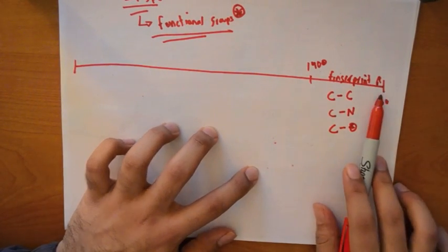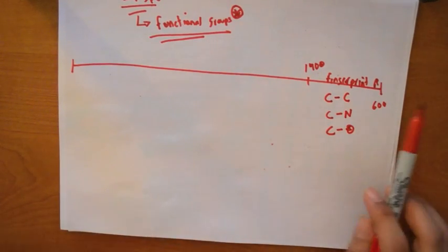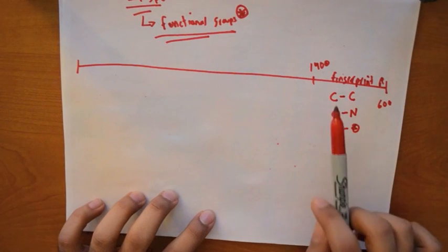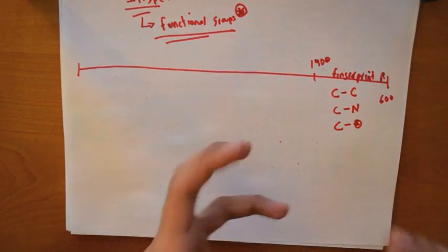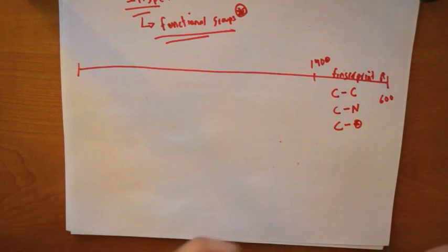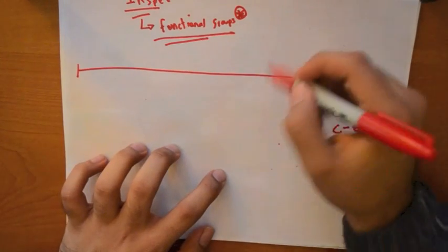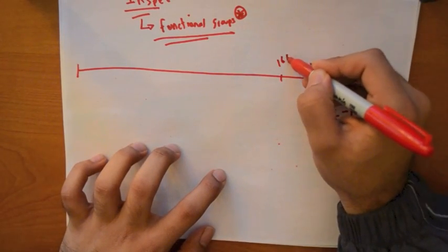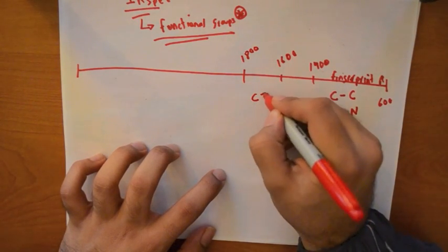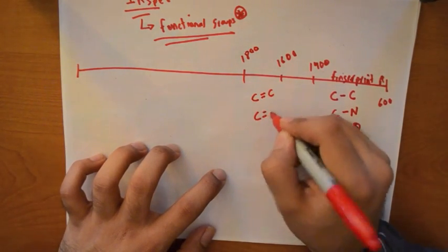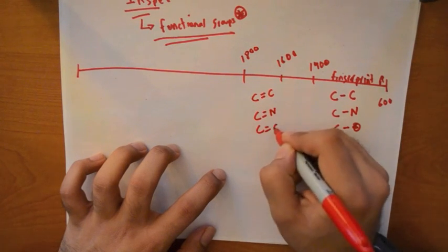Usually for a first year chemistry course or organic chemistry course, the fingerprint region is not enough information or it doesn't tell you much about it because this cluster of stretches in one region. So we move on to another region which is 1600 to 1800. And in this region, it's just C double bond C, C double bond N, and C double bond O.